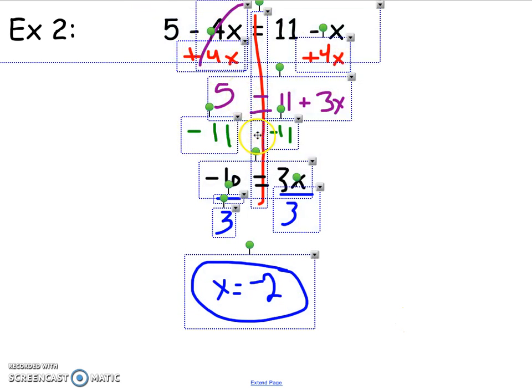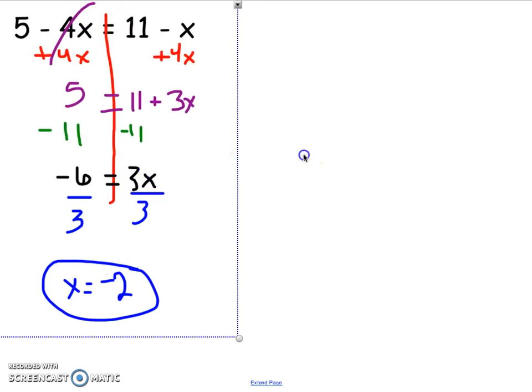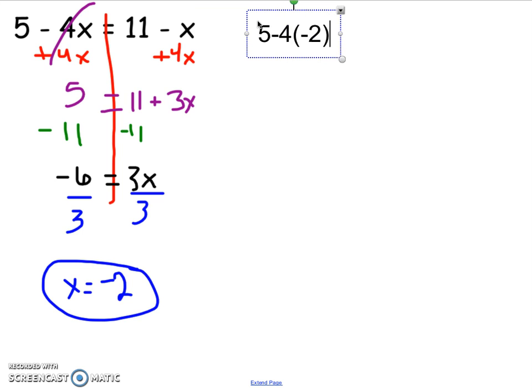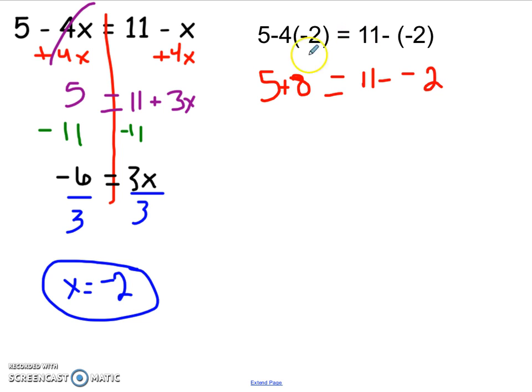To double check that, I'm going to put it back in my original problem and make sure it actually works out. So I've got 5 minus 4 times negative 2. Does that actually equal 11 minus negative 2? I put the negative 2 in parentheses on the right hand side just to help me make sure I saw that there were two negatives there. So negative 4 times a negative 2 is a positive 8. So I've got 5 plus 8 on the left. 5 plus 8 is 13. And then 11 minus negative 2, I'm going to leave change opposite. That becomes 11 plus 2, which is also 13.